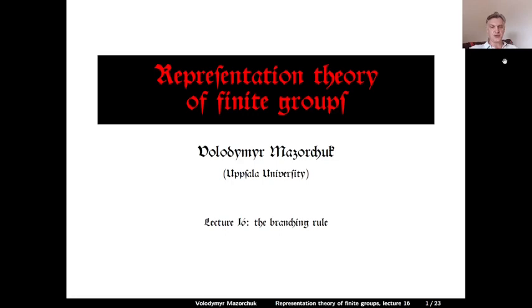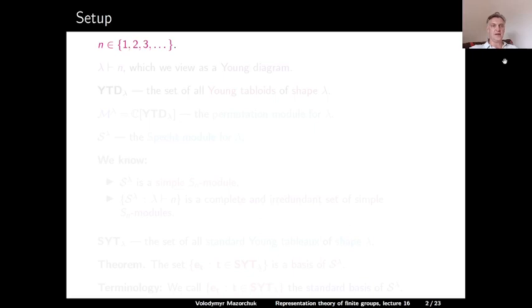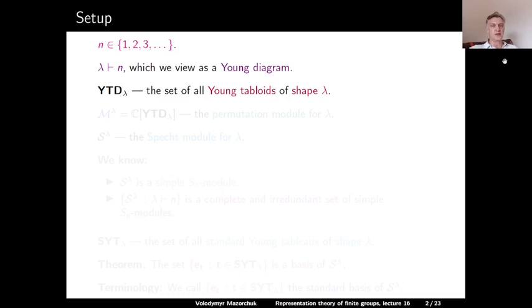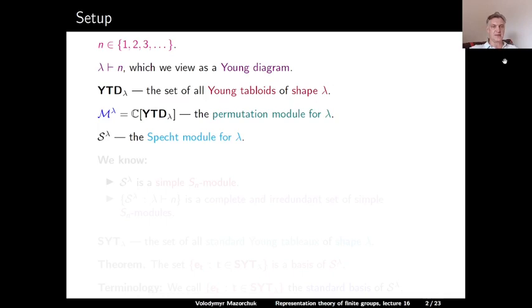Let us start with our setup. Let n be a positive integer and lambda a partition of n. We view lambda as the corresponding Young diagram. Consider the set of all Young tabloids of shape lambda, denoted ytd of lambda. The linearization of the action of the symmetric group on this set is called the permutation module for lambda, denoted M upper lambda. The permutation module M upper lambda has the Specht submodule denoted S upper lambda.